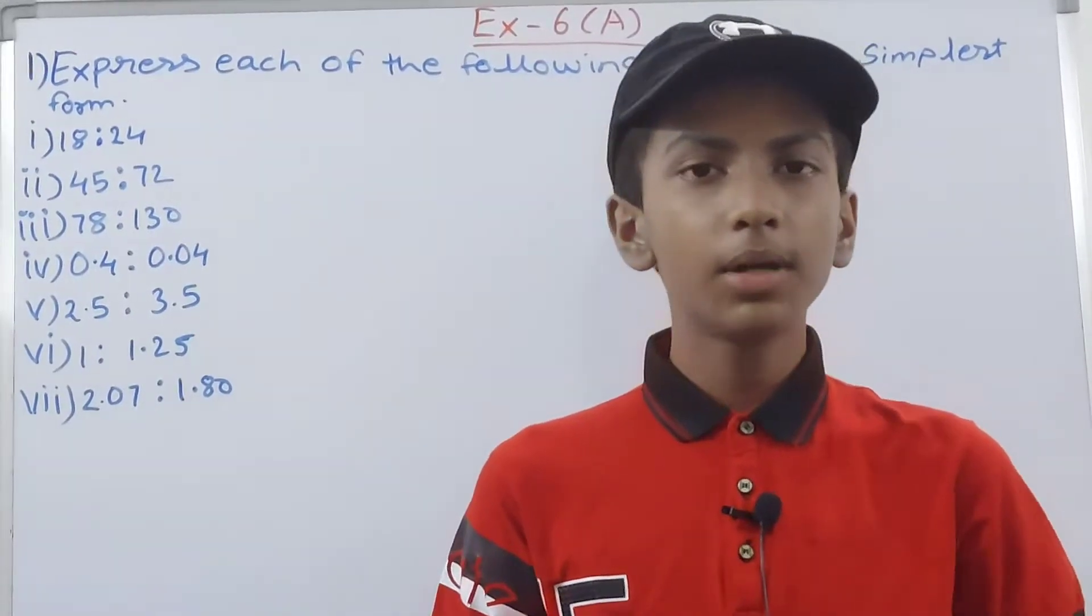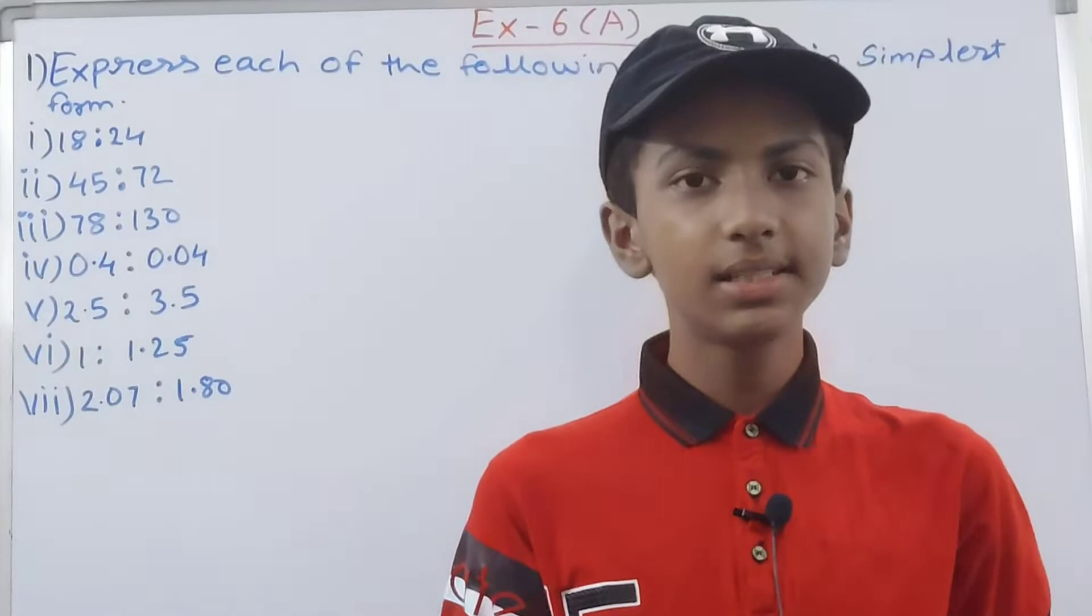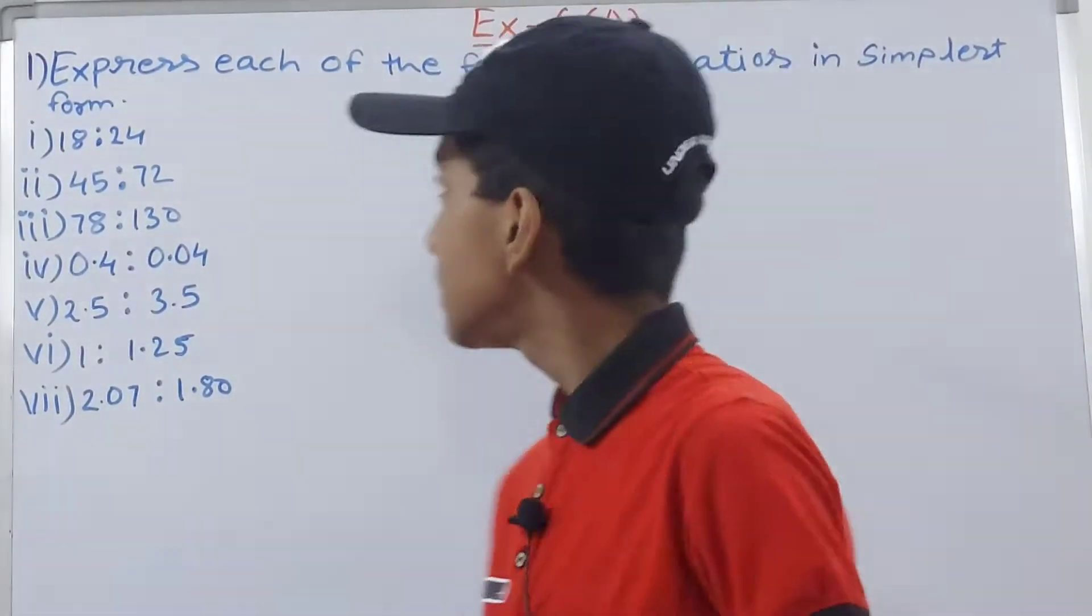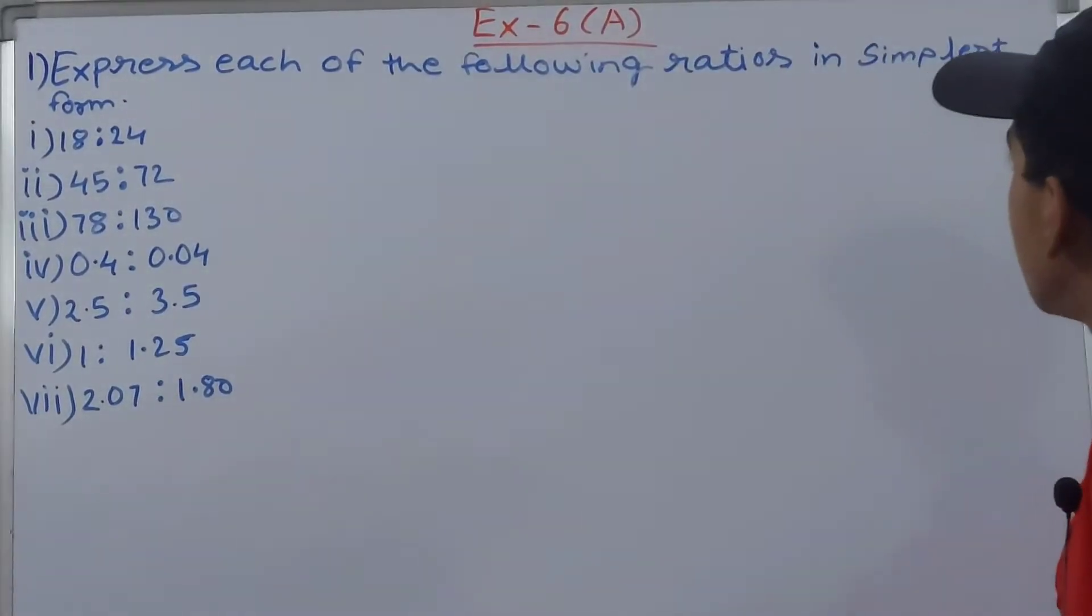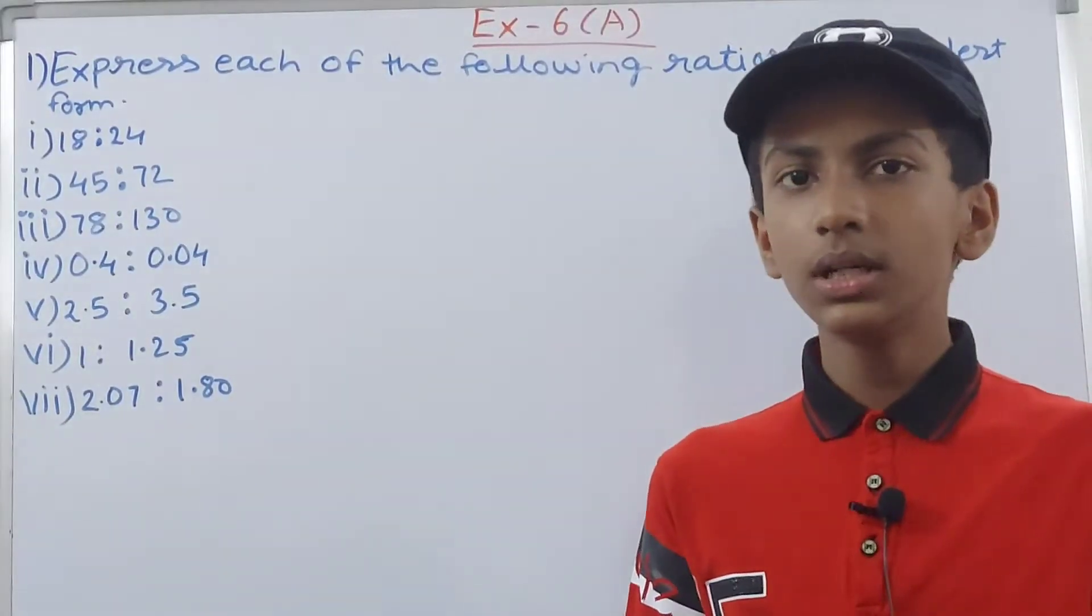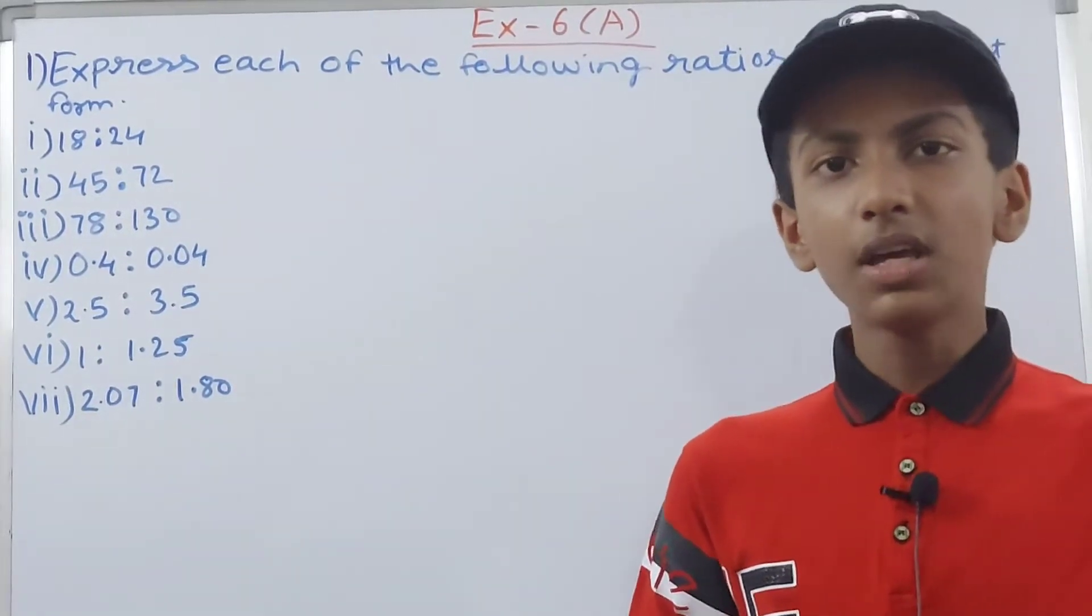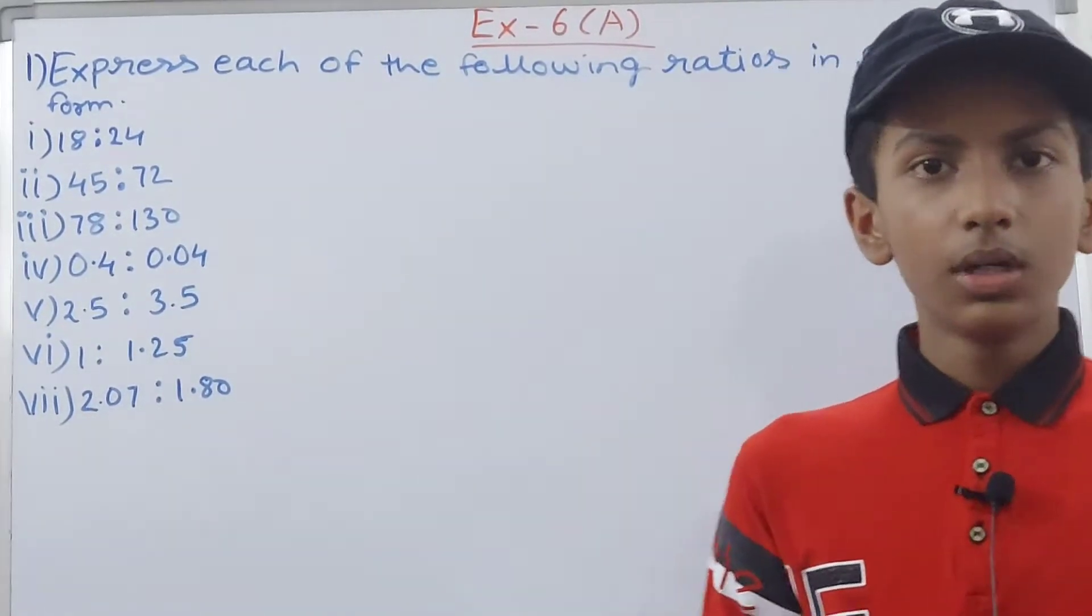We're going to solve ICSE Mathematics Class 7, Chapter 6: Ratio and Proportion, Exercise 6A, Question 1. This one is express each of the following ratios in simplest form. You can see that the quantities with the same unit or the same type of quantities when they are being compared, we compare them in the form of a ratio.